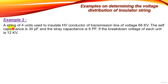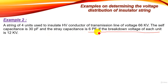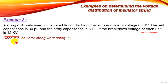Example 2: A string of four units is used to insulate a high voltage conductor of a 66 kilovolt transmission line. The self-capacitance is 30 picofarad and stray capacitance is 6 picofarad. Importantly, the breakdown voltage of each unit is 12 kilovolt — meaning each unit can withstand up to 12 kV; if exceeded, the unit will break down. Does this insulator string work safely?